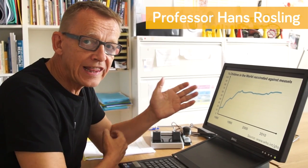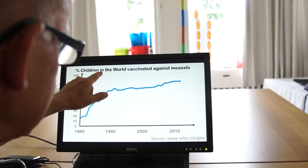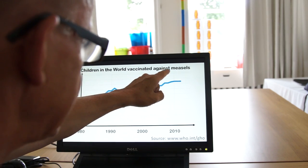This graph I both love and hate. It shows percent children in the world that have got vaccinated against measles.